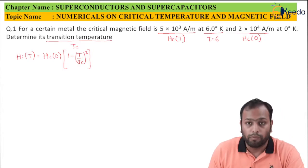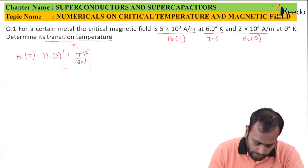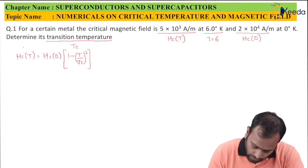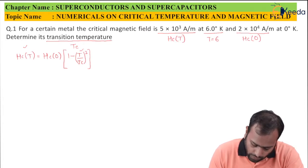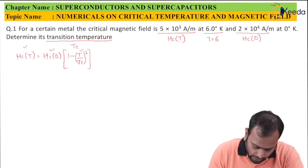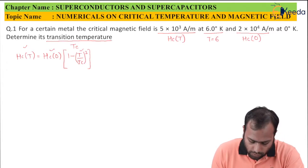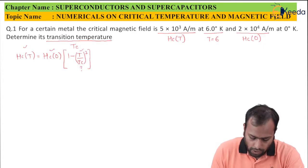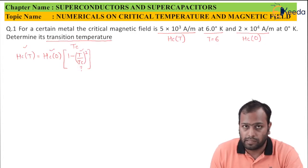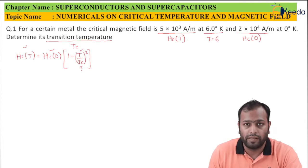In this formula with the given details, we are given the values of Hc(T), T=6, and Hc(0)=2×10⁴. The only unknown is Tc. Out of the 4 variables, 3 are known and 1 is unknown, so it would be very easy to solve.